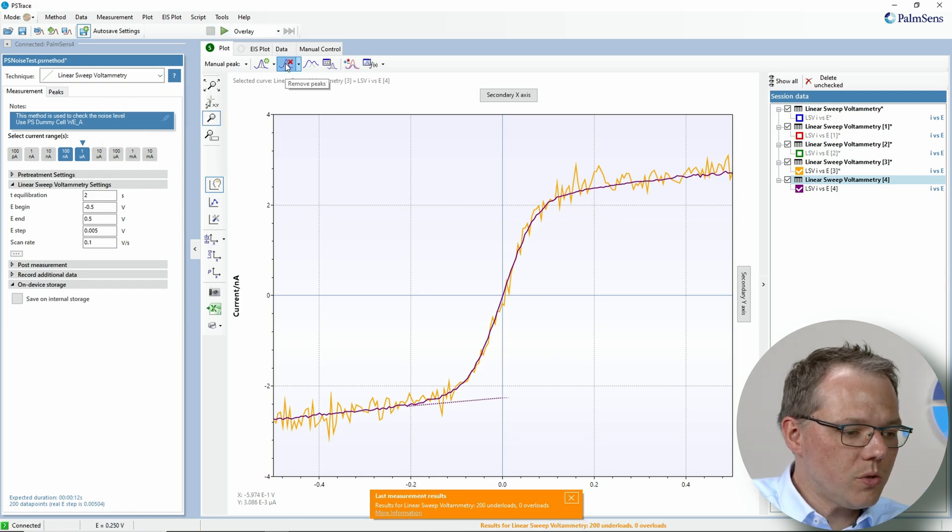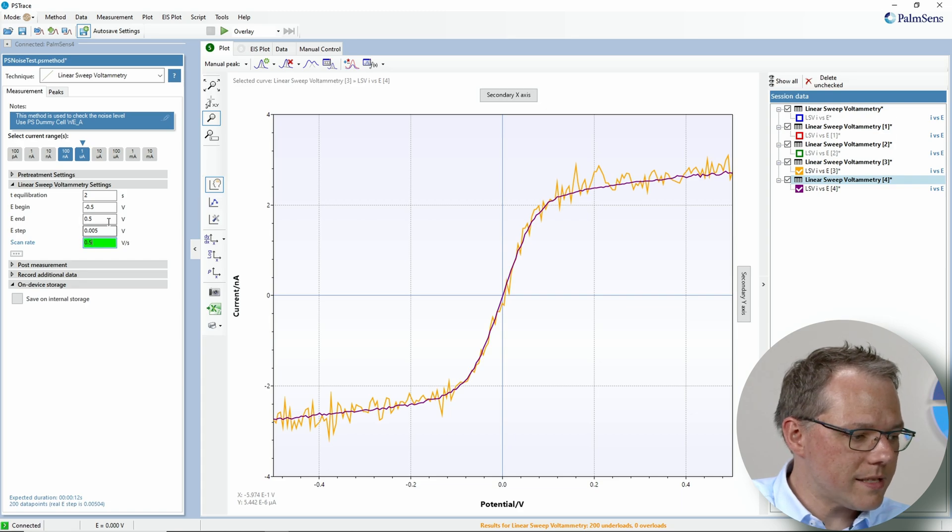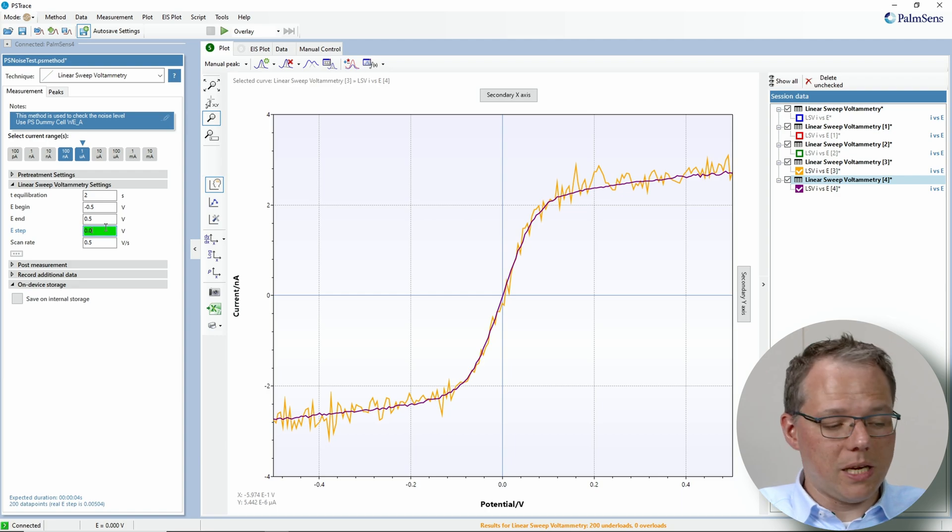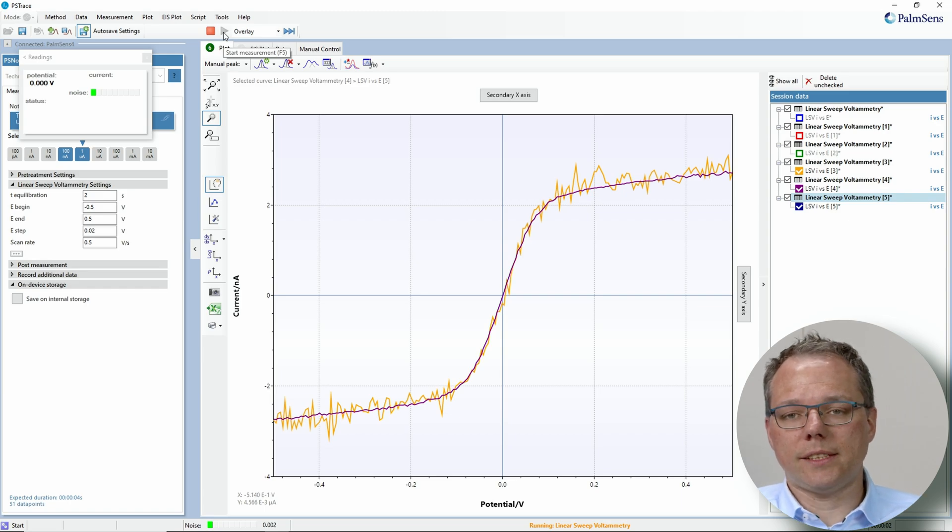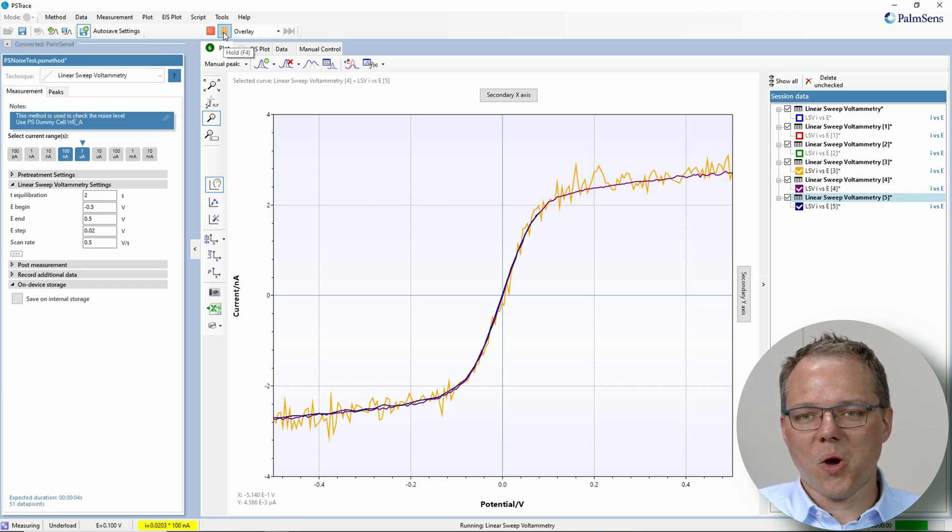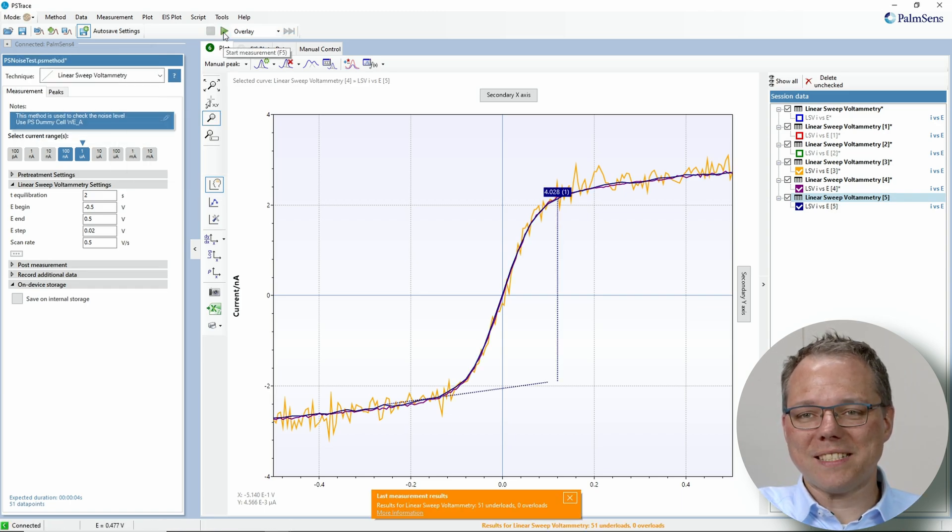It's the same measurement, same setup. I just reduced the scan rate. But what if you don't have a choice for your scan rate? What if your experiment demands that high scan rate? Well you can just try to increase the step potential. This still means the potentiostat will hold the same potential longer. So let's go from 5 millivolts to 20 millivolts step size and then repeat the measurement again. All right that looks a lot better.